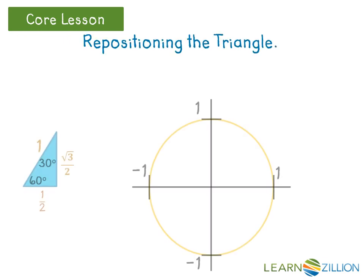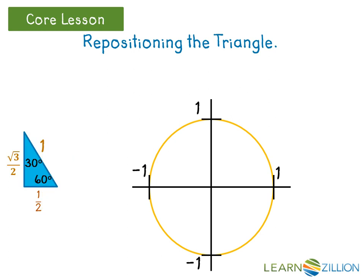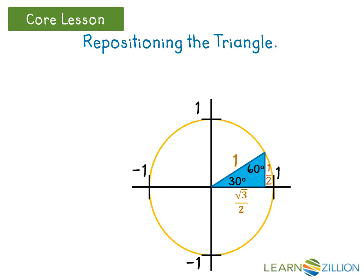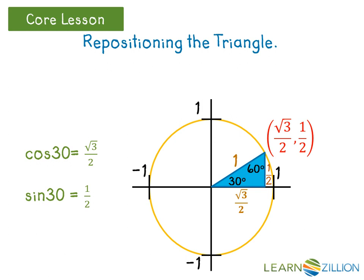By reflecting and rotating the same triangle and then placing it back within the unit circle, we can find the coordinates for the point that is located where the reference angle is 30 degrees. As you can see, the coordinates are the square root of three over two, one-half. This means that the cosine of 30 is the square root of three over two, and the sine of 30 is one-half.